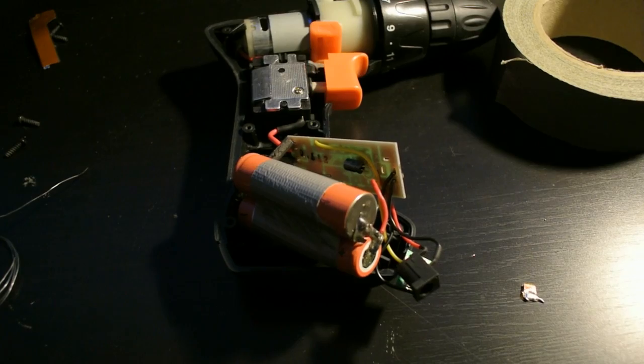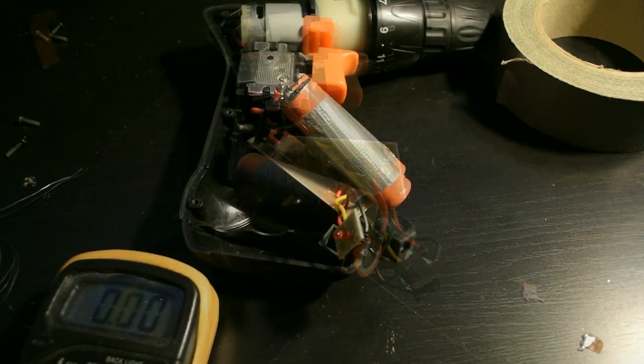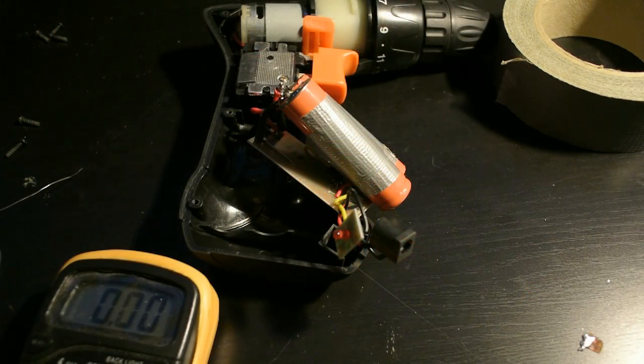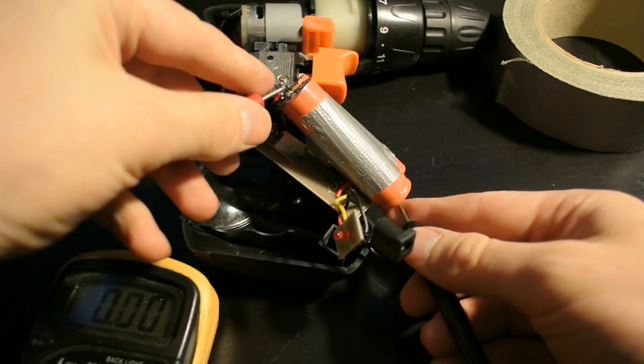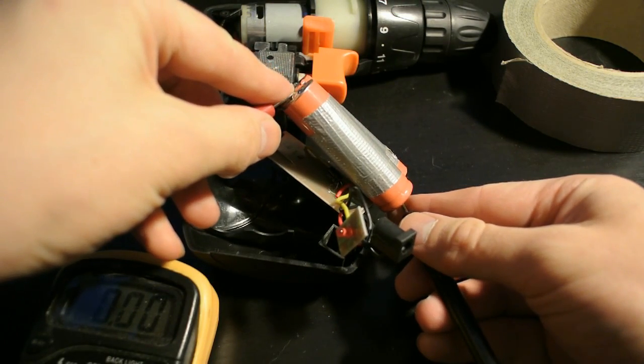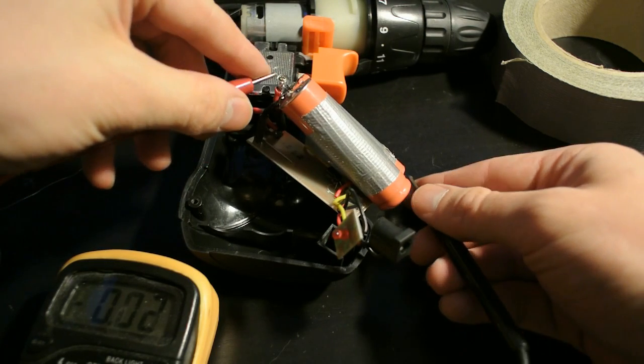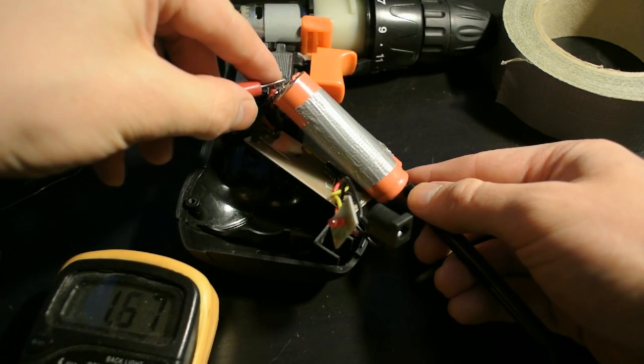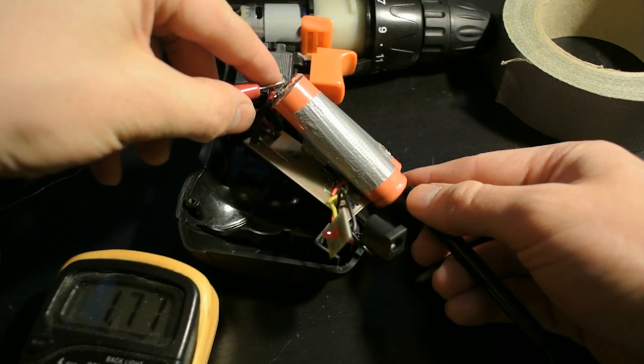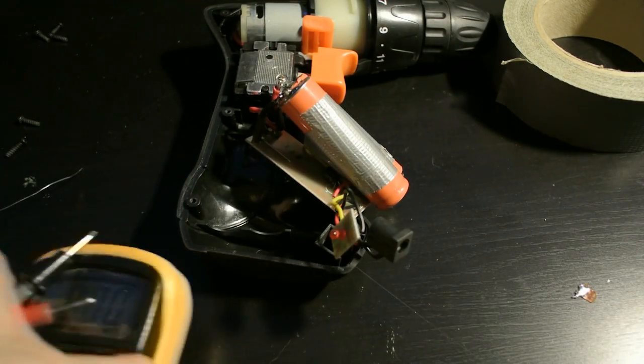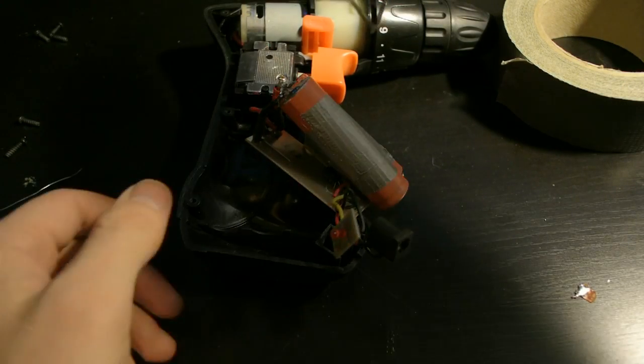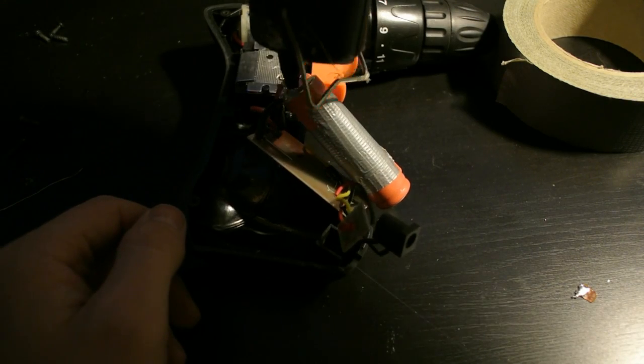And our work is almost done, the cell is soldered in correctly but before we go forward we're going to test it that it actually works in place before we close it in. Voltage seems okay. Since the heat shrink tubing didn't work I'm just going to use hot glue for the insulation.